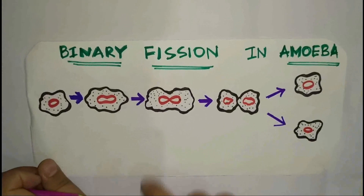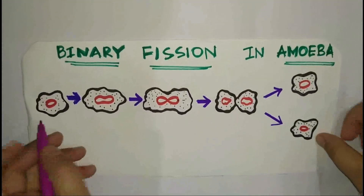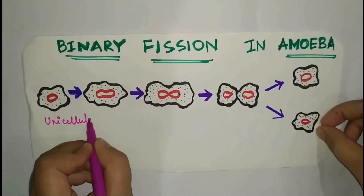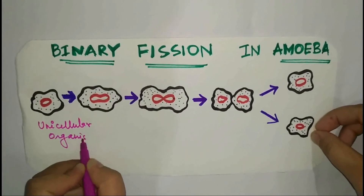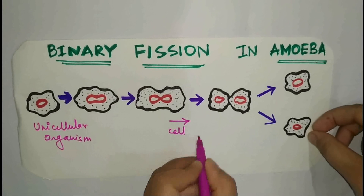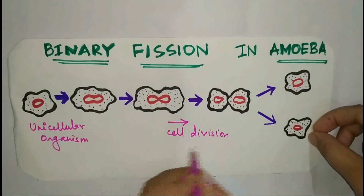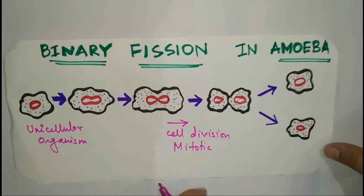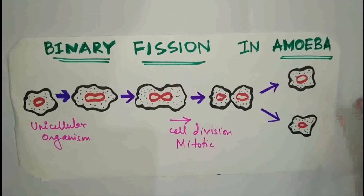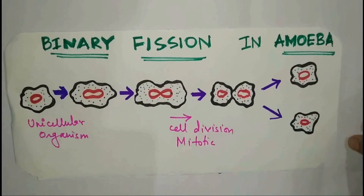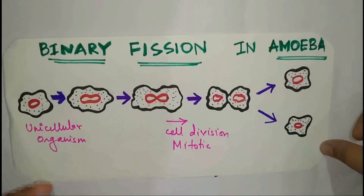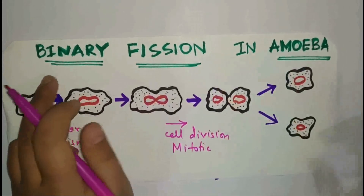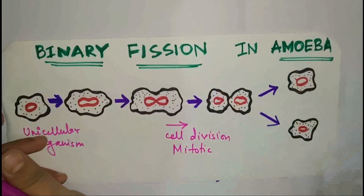The process we discussed is similar to a process called binary fission. In amoeba, for example — amoeba is a unicellular organism — this unicellular organism undergoes a process of cell division that is mitotic in nature. As it is mitotic, these cells are clones — xerox copies of one another. The same process we already discussed applies to amoeba, and it is called binary fission. We will discuss binary fission in detail in further videos.